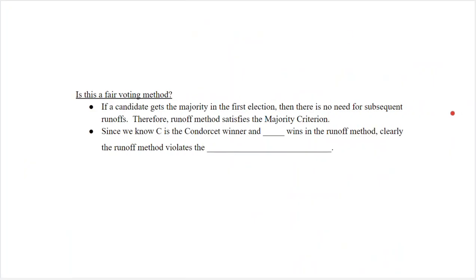Is this a fair method? If a candidate gets a majority of first place votes in the first round, we're done — so plurality with elimination satisfies the majority criterion. However, looking back at the previous video, Carmen was our Condorcet winner, but Dave won plurality with elimination. So this method can violate the Condorcet criterion.